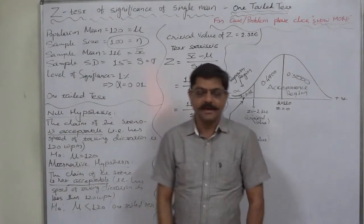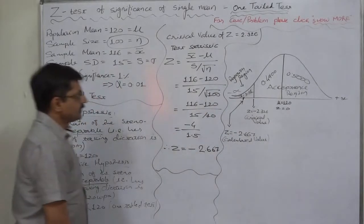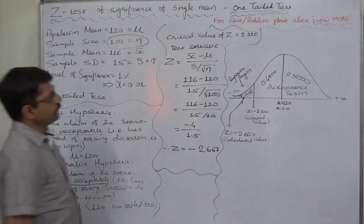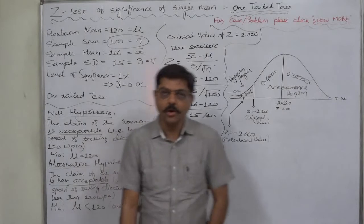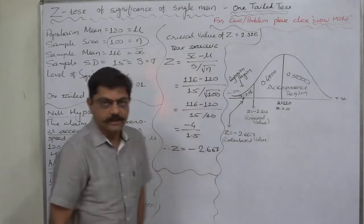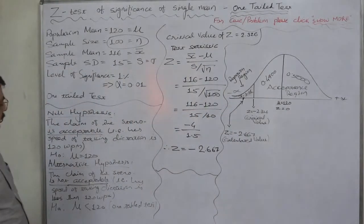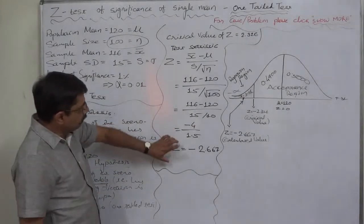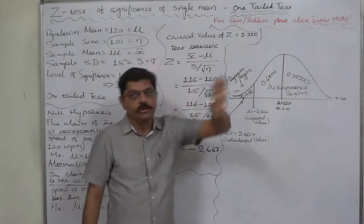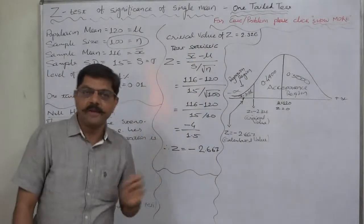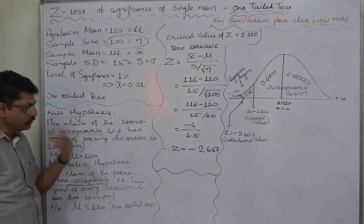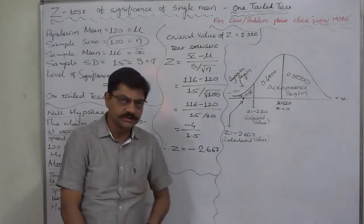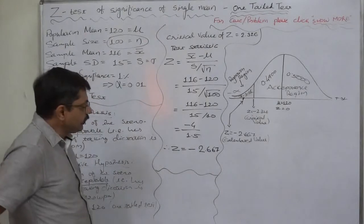Hello, welcome back and namaskar. We are discussing a case of selection appointment of a stenographer. In the previous lecture, we used the comparison of calculated value of z and critical value of z for arriving at statistical conclusion at the end of the test of hypothesis.